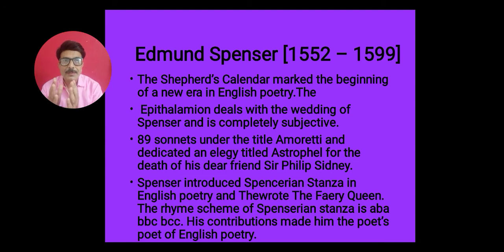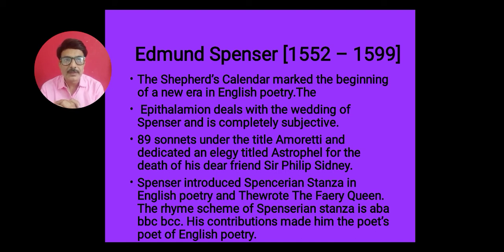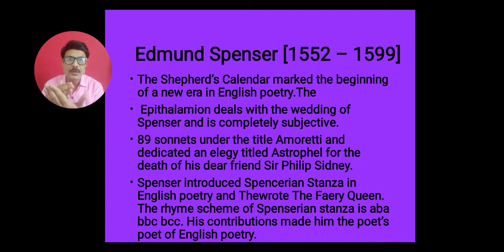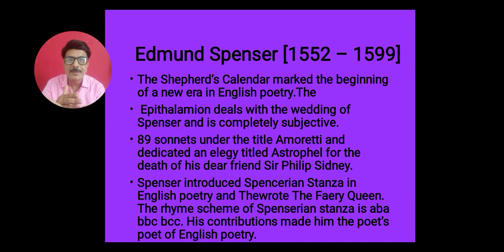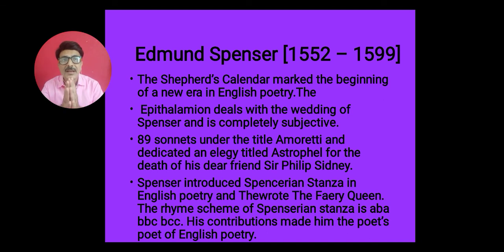Moving to the Elizabethan period, the first important poet is Edmund Spencer, born in 1552 and died in 1599. Spencer wrote The Shepherd's Calendar, written in 12 cantos — just as we have 12 months in a year, it is a pastoral poetry written in 12 parts. This marks the beginning of a new era of English poetry and the element of romance in English literature.